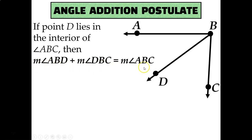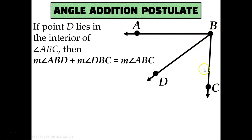Specifically, let's look at this equation. It says that the measure of angle ABD — ABD is this angle right here — plus the measure of angle DBC, that's this angle right here, is equal to the measure of angle ABC. ABC, that's this whole angle. So in other words, what this postulate is telling us is that you can figure out this entire angle measure, ABC, by adding up each of the little angles inside of it that make up that angle.